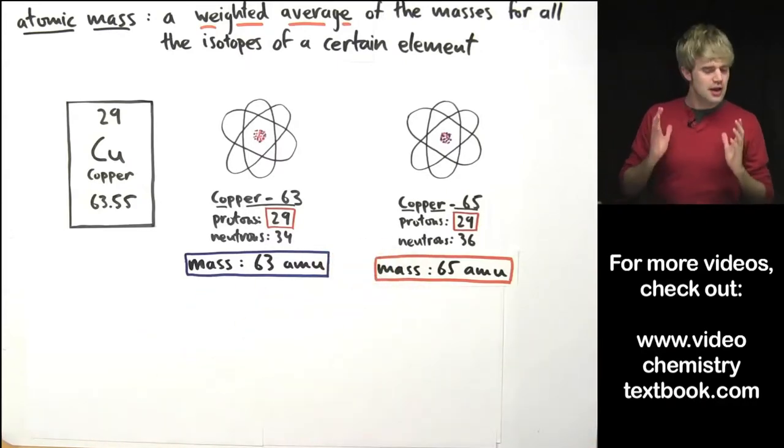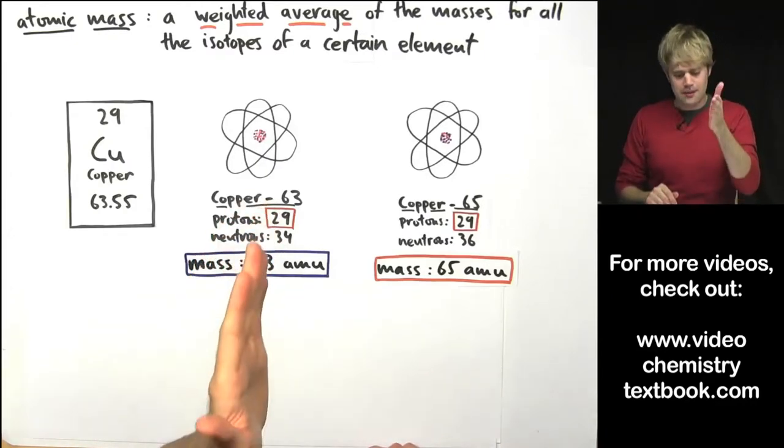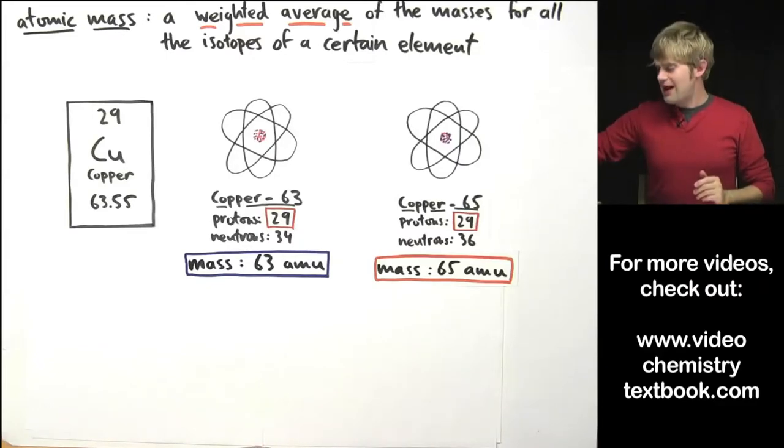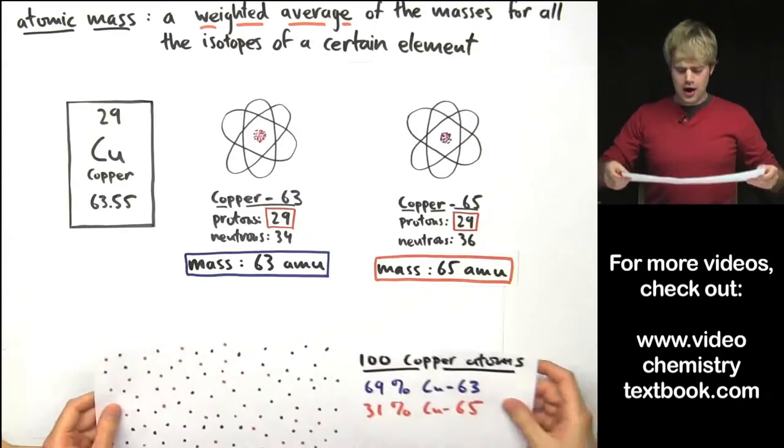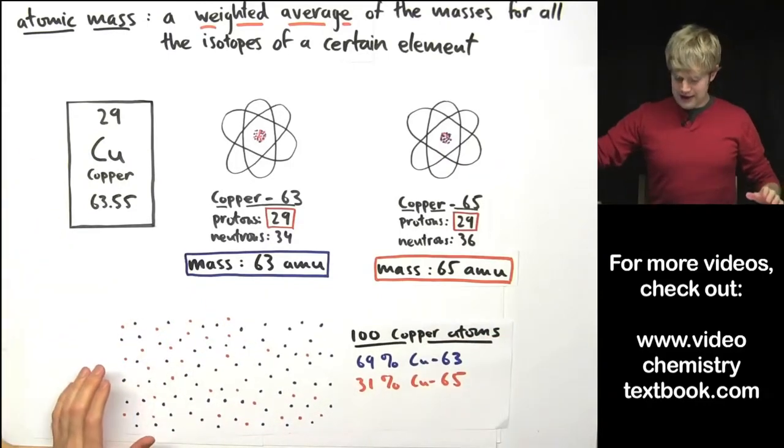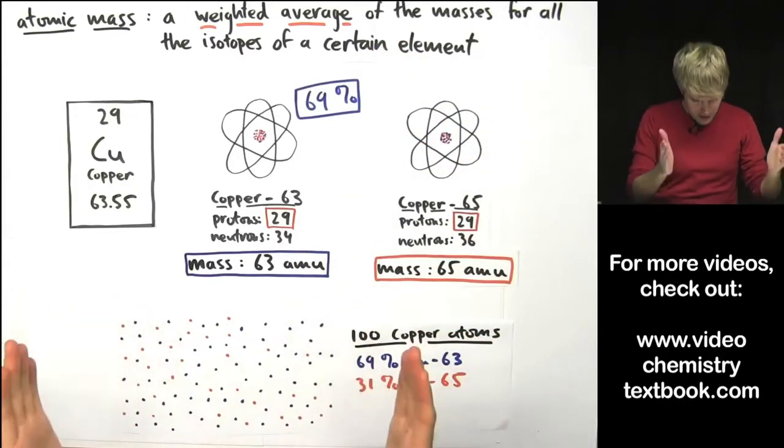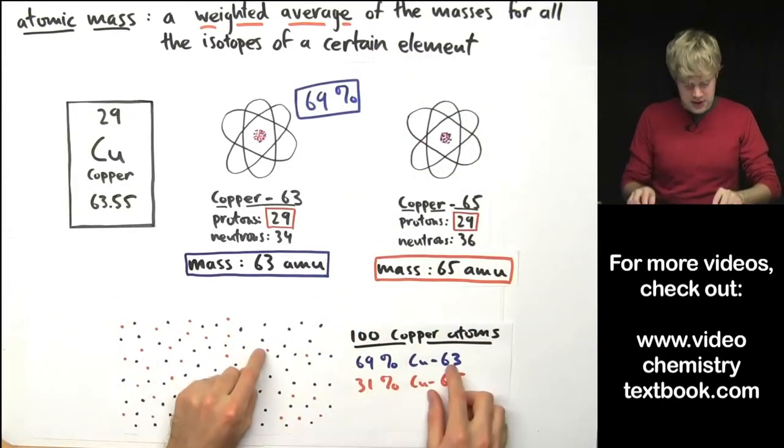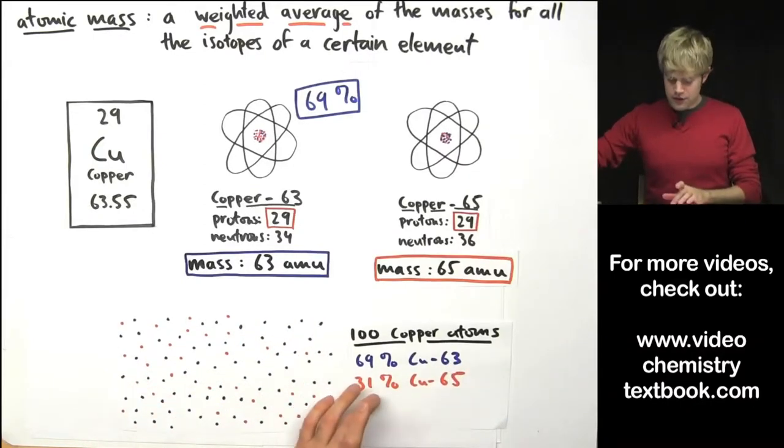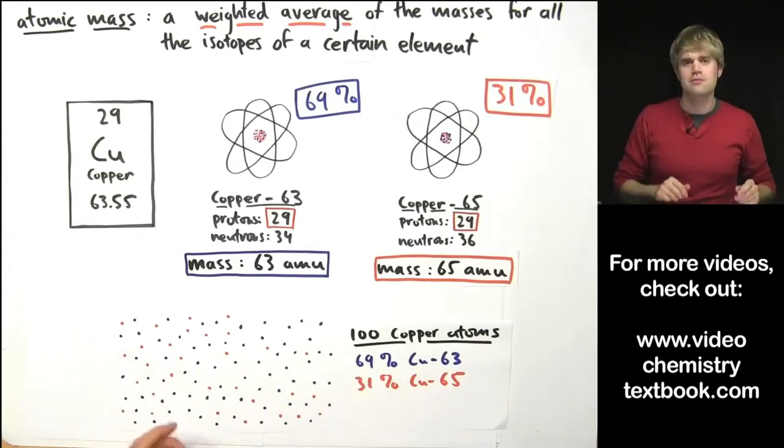But also, just like the Lamona, we don't have the same number of copper-63 and copper-65 atoms. If we randomly pulled 100 copper atoms out of the world, we'd find that 69% of them are copper-63. Here are my 100 copper atoms and the 63 ones are represented by blue dots. And we'd find that 31% of those are copper-65 atoms. So, the point is...